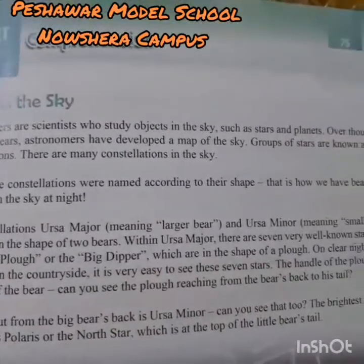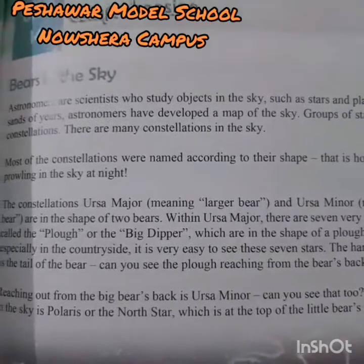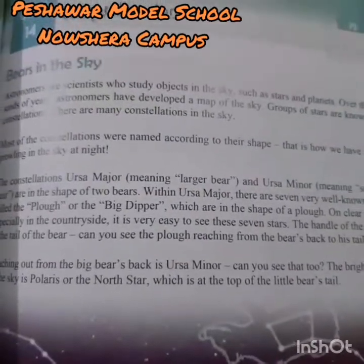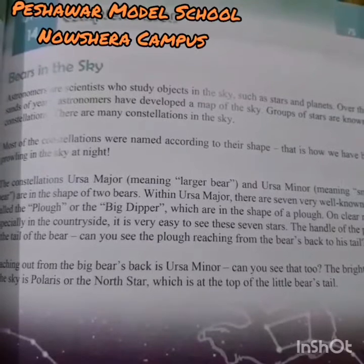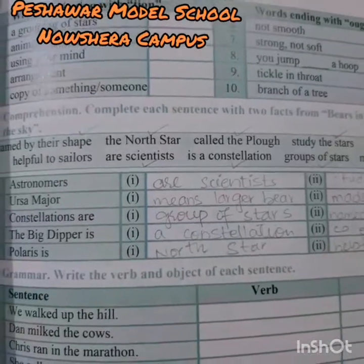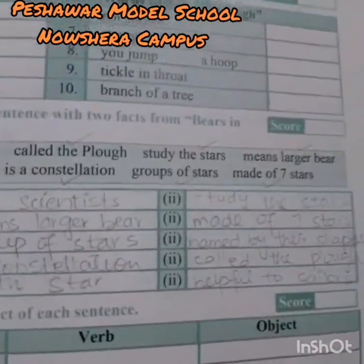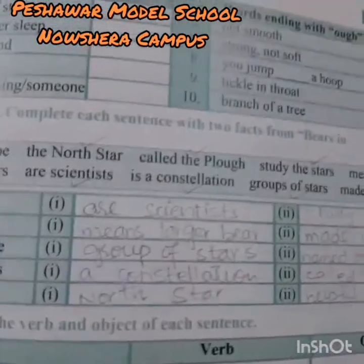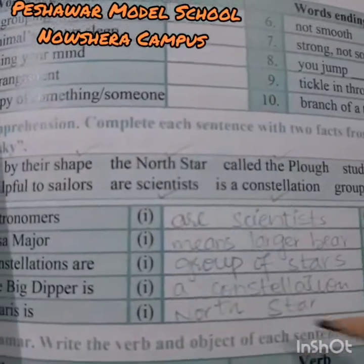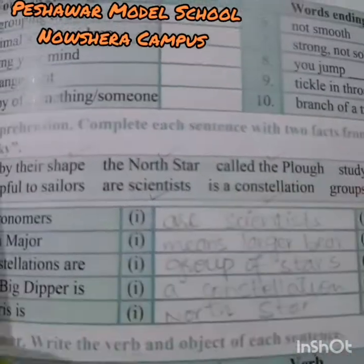Let's read what's there about astronomers: 'Astronomers are scientists who study objects in the sky, such as stars and planets.' Now we will find two options related to astronomers in the question. Here they are — astronomers are scientists, and astronomers study the stars. We have selected two: 'are scientists' and 'study the stars.' This one is done.